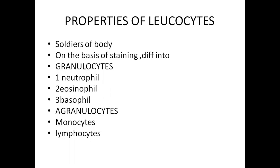Leukocytes are called the soldiers of the body because they protect our body from infectious agents. On the basis of staining, they are differentiated into two types: granulocytes and agranulocytes. Granulocytes are of three types — neutrophils, eosinophils, and basophils — while agranulocytes are monocytes and lymphocytes.